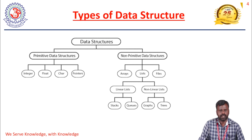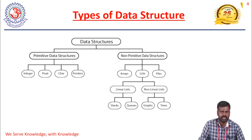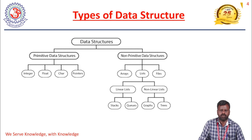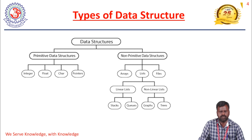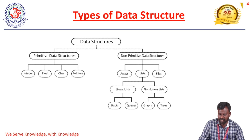The next topic is types of data structures. Basically, data structures have two types: primitive data structures and non-primitive data structures. Primitive data structures are the basic built-in types: integer, float, character, and pointers. Non-primitive data structures are further classified into three categories: arrays, linked lists, and lists. Lists are further classified into linear lists and non-linear lists; linear lists include stacks and queues.